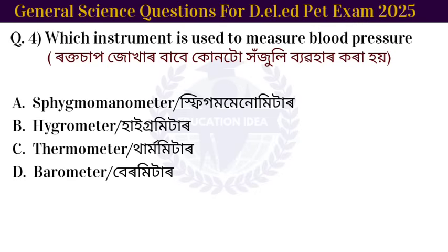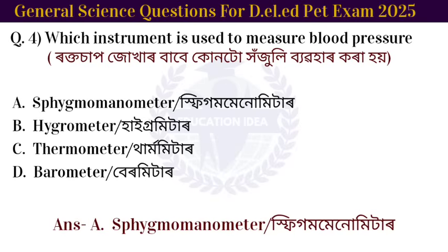Next question: which instrument is used to measure blood pressure? The option for the instrument used to measure blood pressure is a sphygmomanometer.